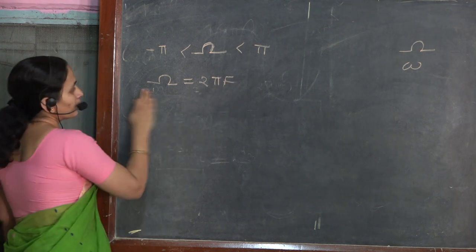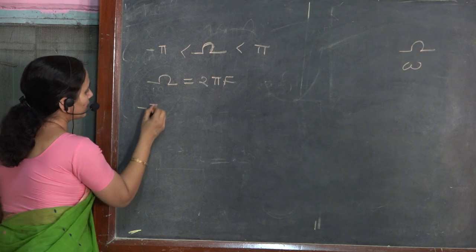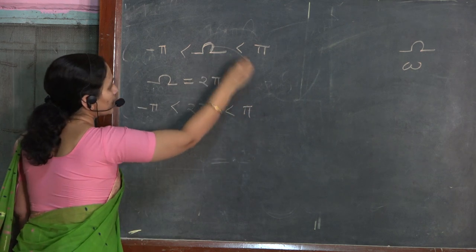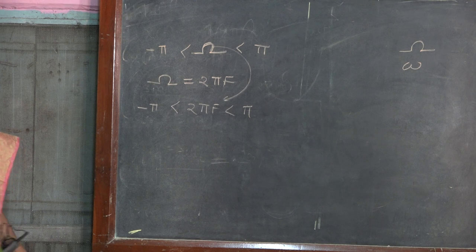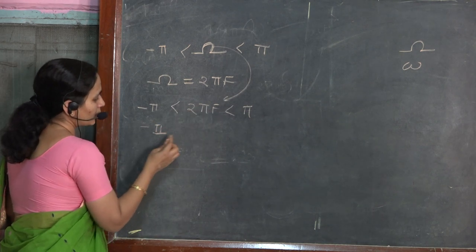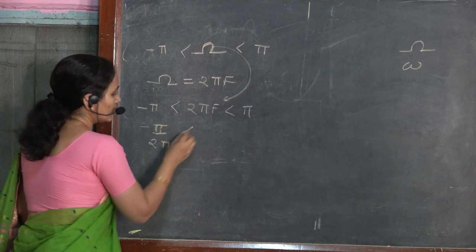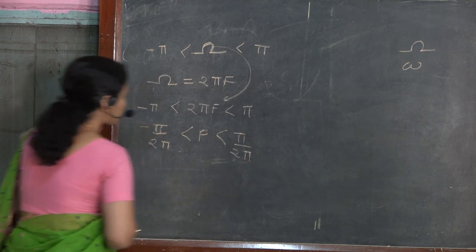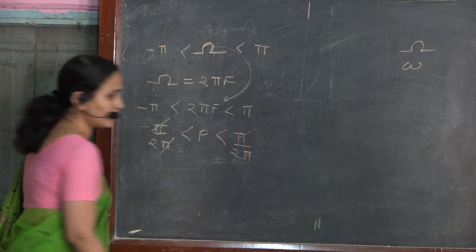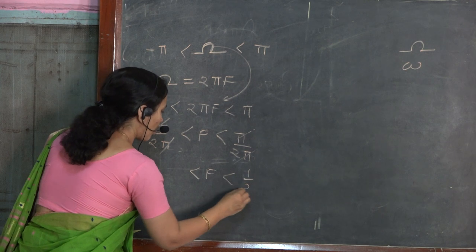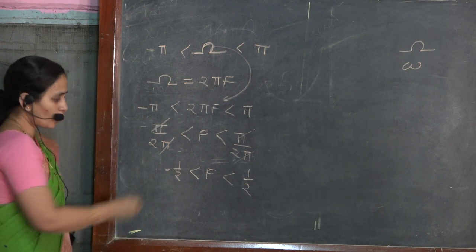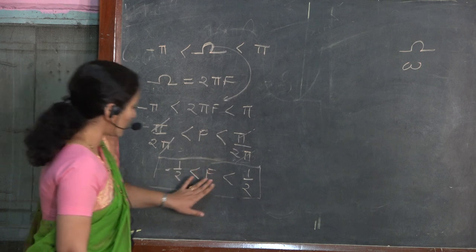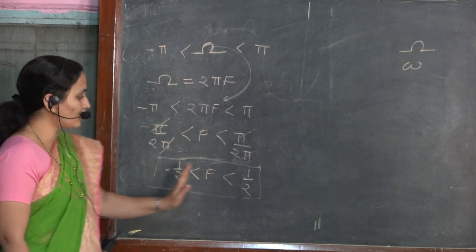If this relation is held true, I can write: minus π ≤ 2πf ≤ π. What I did is replace Ω by 2πf. Rearranging, minus π over 2π is less than or equal to f, which is less than π over 2π. This and this cancel out, so f lies in the range from minus 1/2 to 1/2. This signifies that the highest frequency present in the analog signal lies in the range from minus 1/2 to 1/2.